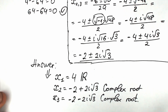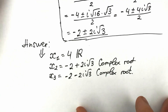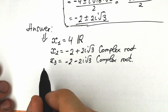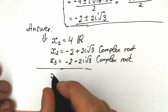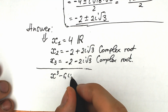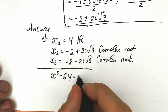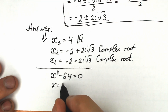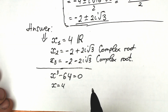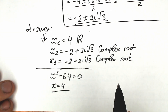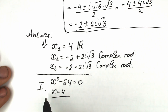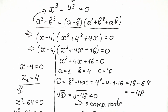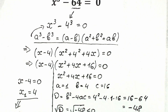Many students are confused because they think they can solve this by inspection. Imagine this on your exam: x cubed minus 64 equal to zero. A lot of students just write x equal to 4 and move on. But compare that one-line solution with the full solution written in around 20 lines with the proper formula.